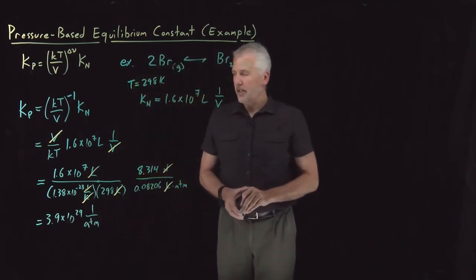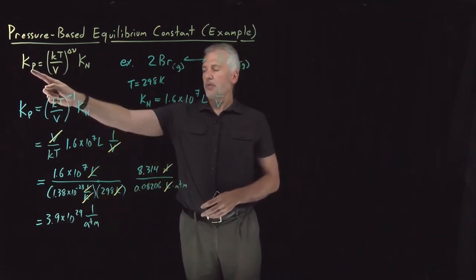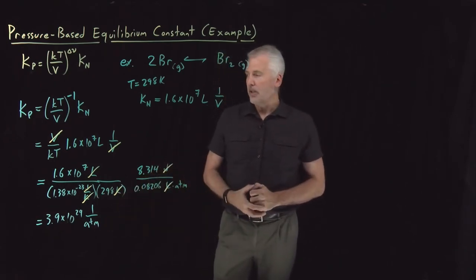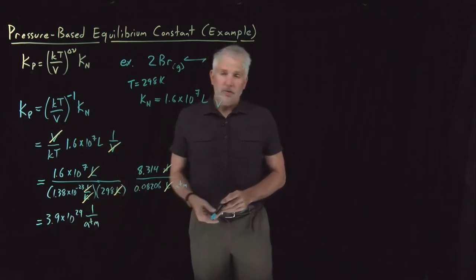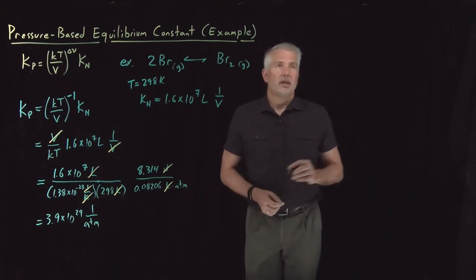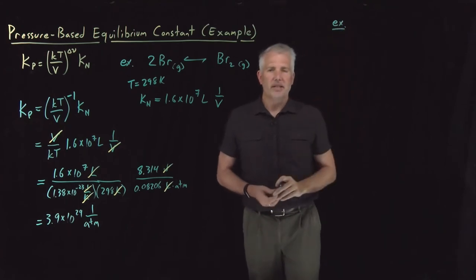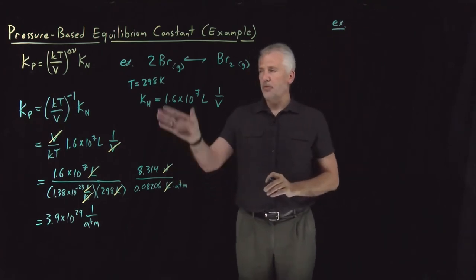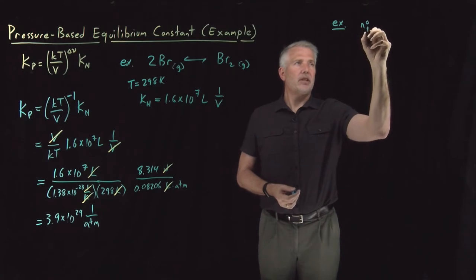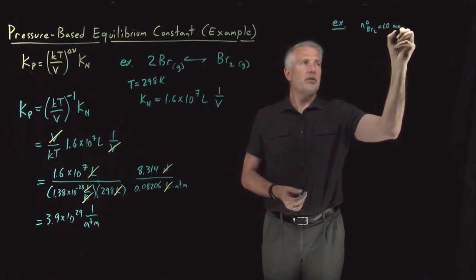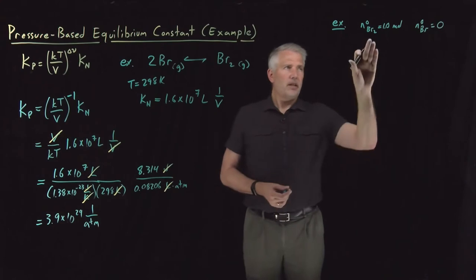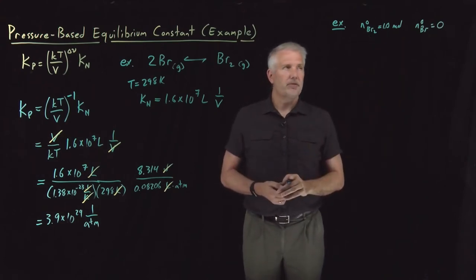That makes sense because the equilibrium constant written in terms of pressures is a ratio of pressures that has more pressures in the denominator than in the numerator. To see how we use Kp, we'll work the same example as before: the Br forming Br2 reaction at 298 Kelvin, initially with one mole of Br2 and no Br atoms.